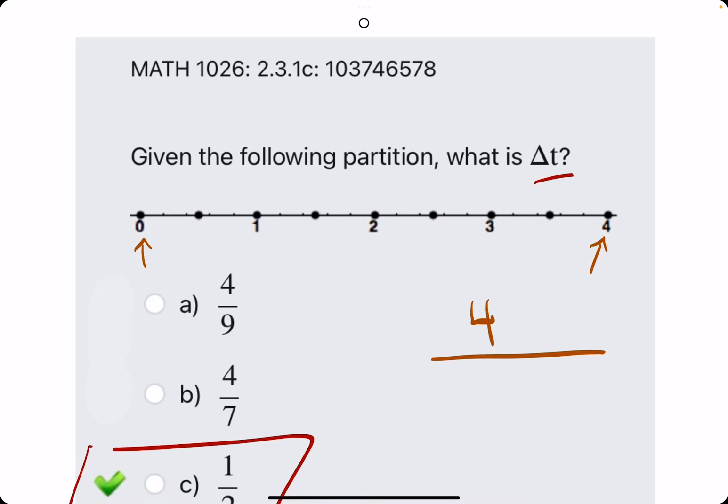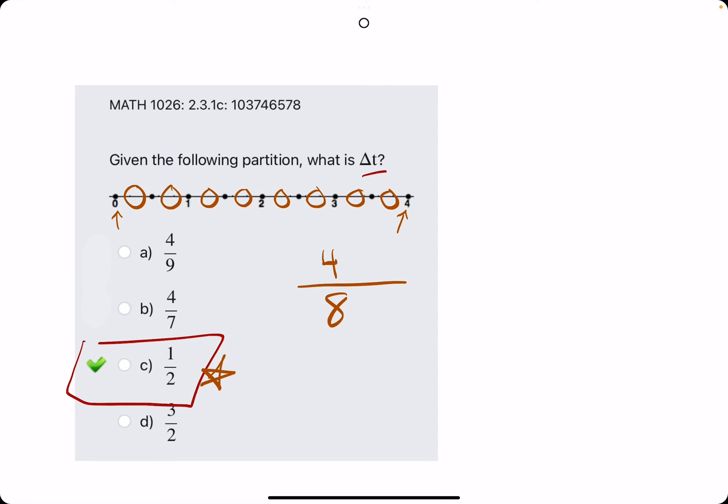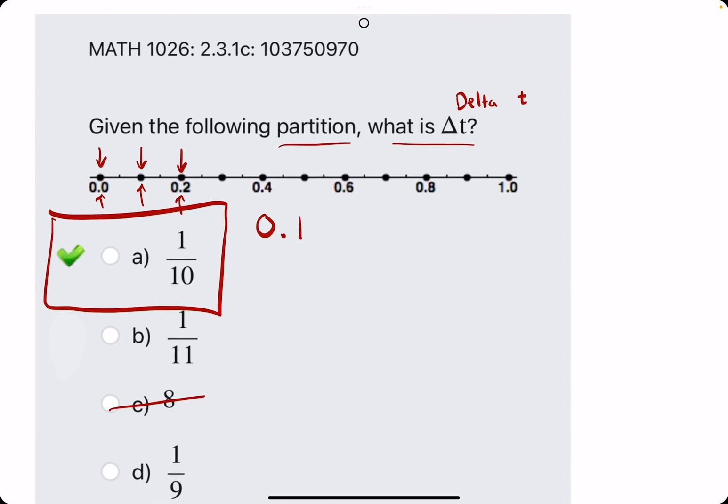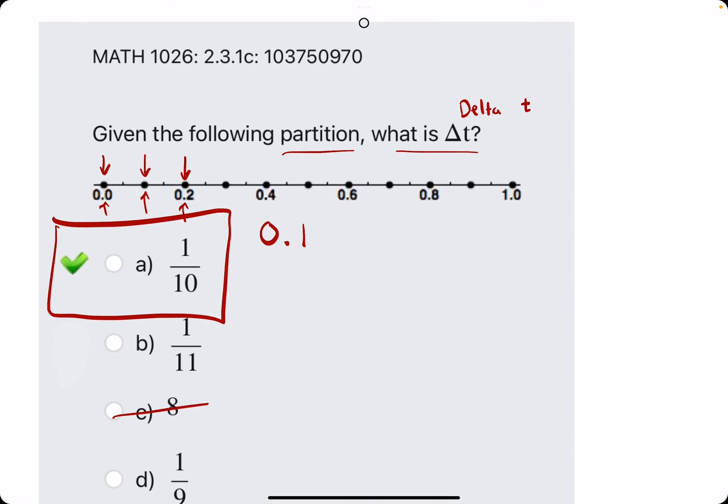Or it's just the amount of gaps in between the dots. That's how I'll word it. So one, two, three, four, five, six, seven, eight gaps. So four over eight is one half.